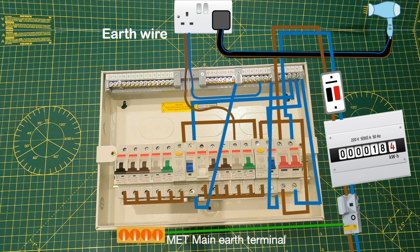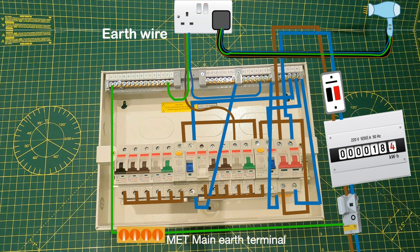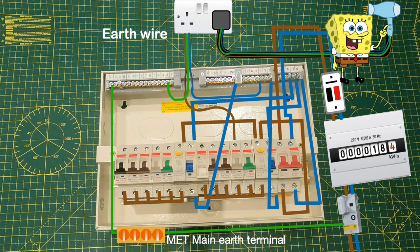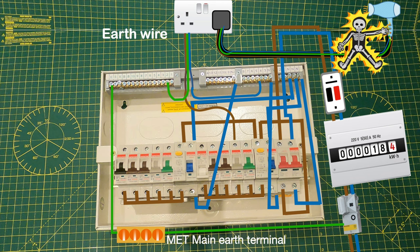From the main earth terminal it makes its way to the earth terminal of the consumer unit. The twin-and-earth cable coming from the socket circuit includes an earth wire to attach to the earth terminal bar in the consumer unit, and the earth wire then makes its way over to the appliance you have plugged in. It's important to note that not all appliances have an earth wire — this might be because it has a plastic casing or the live wire has been designed so it can't touch the casing should it come loose. In the event of a fault, if the earth wire isn't installed correctly and the live wire were to come in contact with a metal casing and you touched that casing, you would get electrocuted.